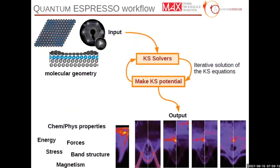For those not necessarily in the field of density functional theory, I reported a very schematic workflow of what the code does. Basically, we start from molecular geometry — the molecule or material under study — and this is the input for PWSCF. Then, starting from that geometry, PWSCF solves iteratively the Kohn-Sham equations, and as output it provides chemical-physical properties of the given molecule: forces, band structure, and magnetism.